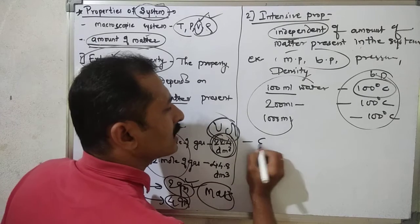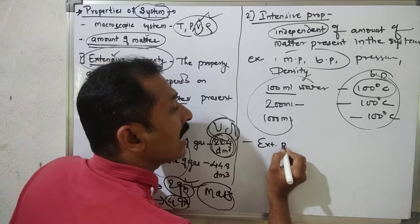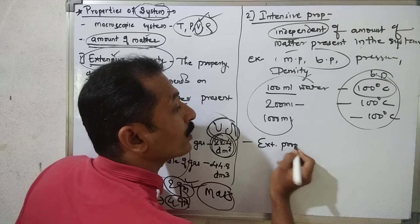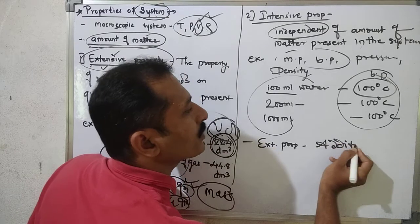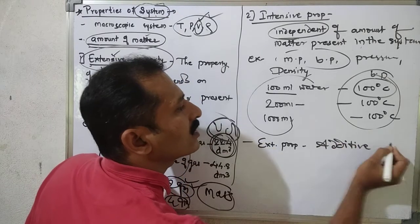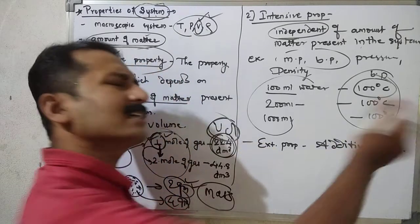The extensive property is an additive property. Now what is meant by additive property? To find the extensive property of a system, we need to add up the individual property values of each particle.